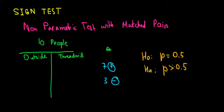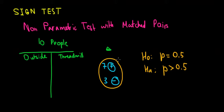Why use a one-sided test? Because intuitively, based on our sample, we can see that we tend to have more positive differences. Based on this sample, we want to see if we can conclude that in the entire population of people who run outside and on a treadmill, we would have more positive differences than negative differences.